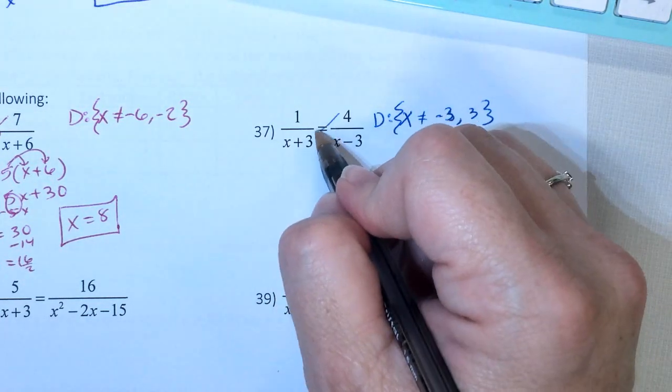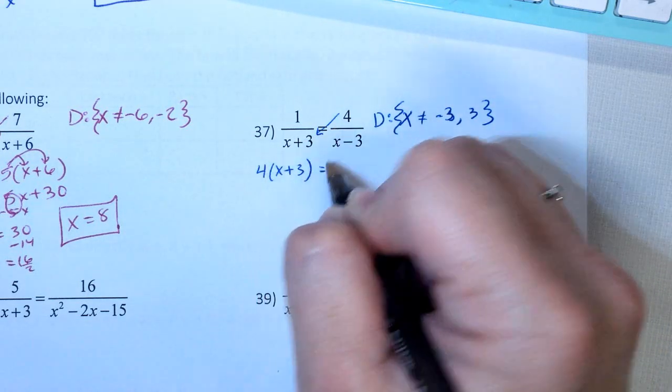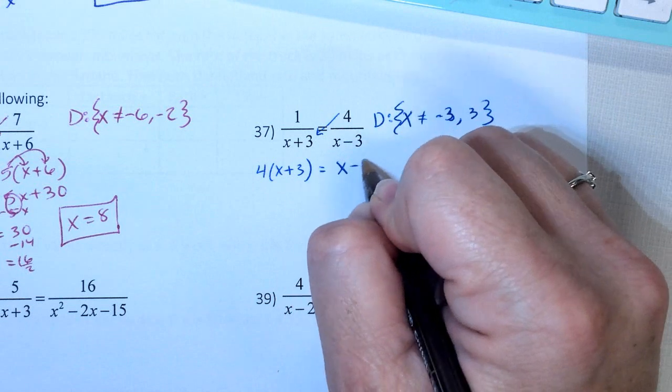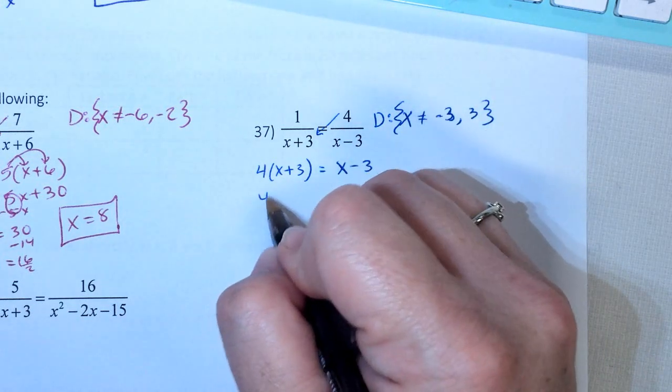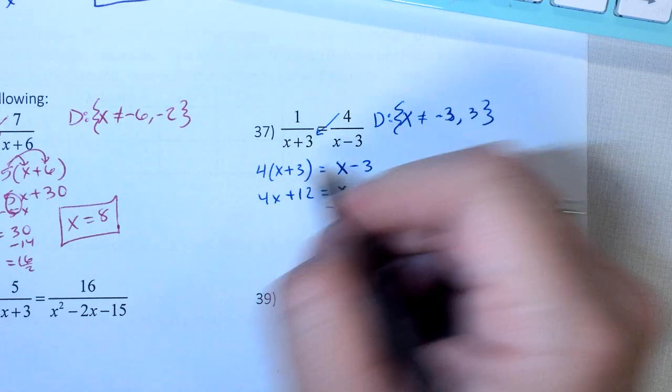So knowing that, we're going to cross multiply. 4x plus 3 equals, well 1 times anything is just itself. So 4x plus 12 equals x minus 3. Minus x minus x.